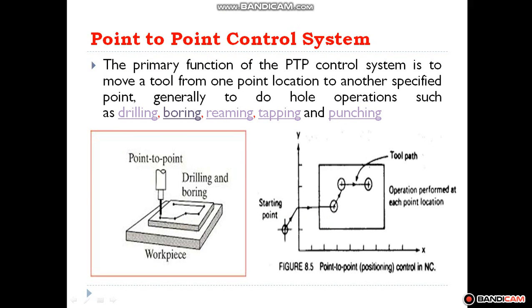The first classification is point to point control system. In this system, the tool moves from one point to another point, and machining occurs at that particular point only. When the tool is moving from the first point to the second point, there is no machining or contact between tool and workpiece. But when it reaches the desired position, it starts machining and contact between the tool and workpiece occurs.